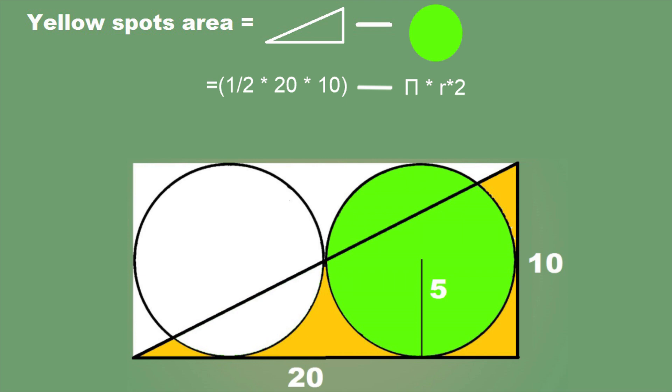After calculation, I see the total area of this triangle is 100 minus the area of the circle, which equals 25 pi. That means 100 minus 25 pi is nearly equal to 21.46, and it is the total area of the yellow region.